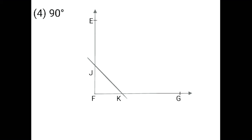Now keep your rounder on point F. Take more than half distance between point F and point G on ray FG. After that, keep your rounder on point J. After taking more than half distance on ray FG between point F and point G, after keeping your rounder on point J, draw the arc. Now keep your rounder on point K and draw the other arc — you have to cut this arc. From point F you have to draw the ray at the positions where I cut two arcs on point J and point K. Join the ray now from point F.